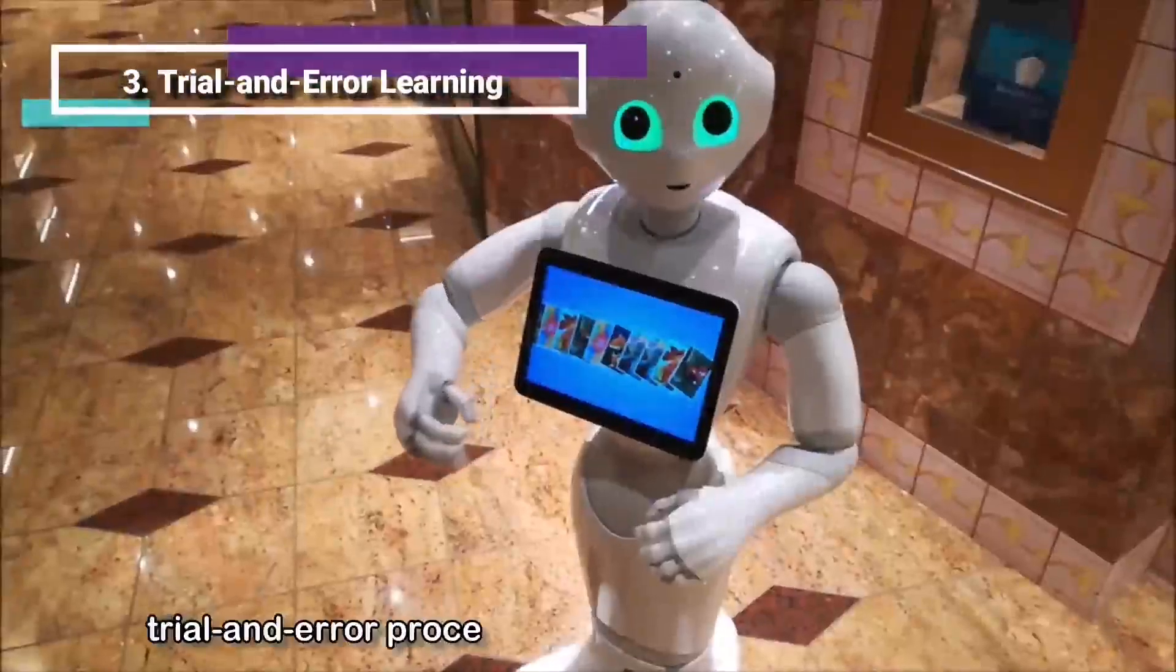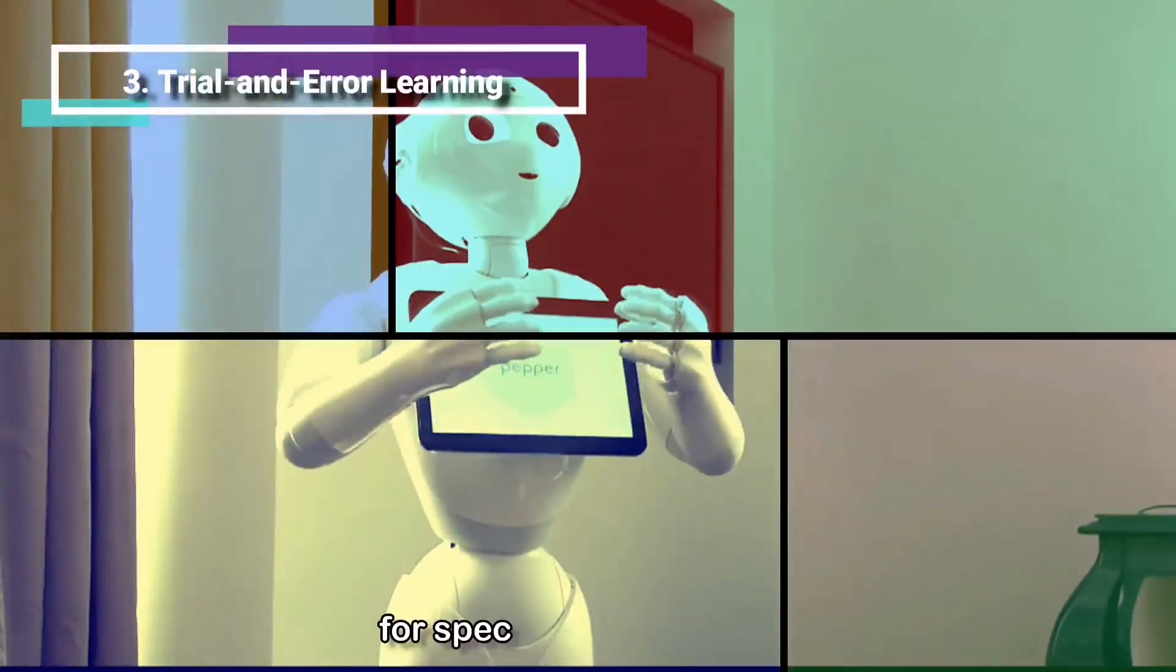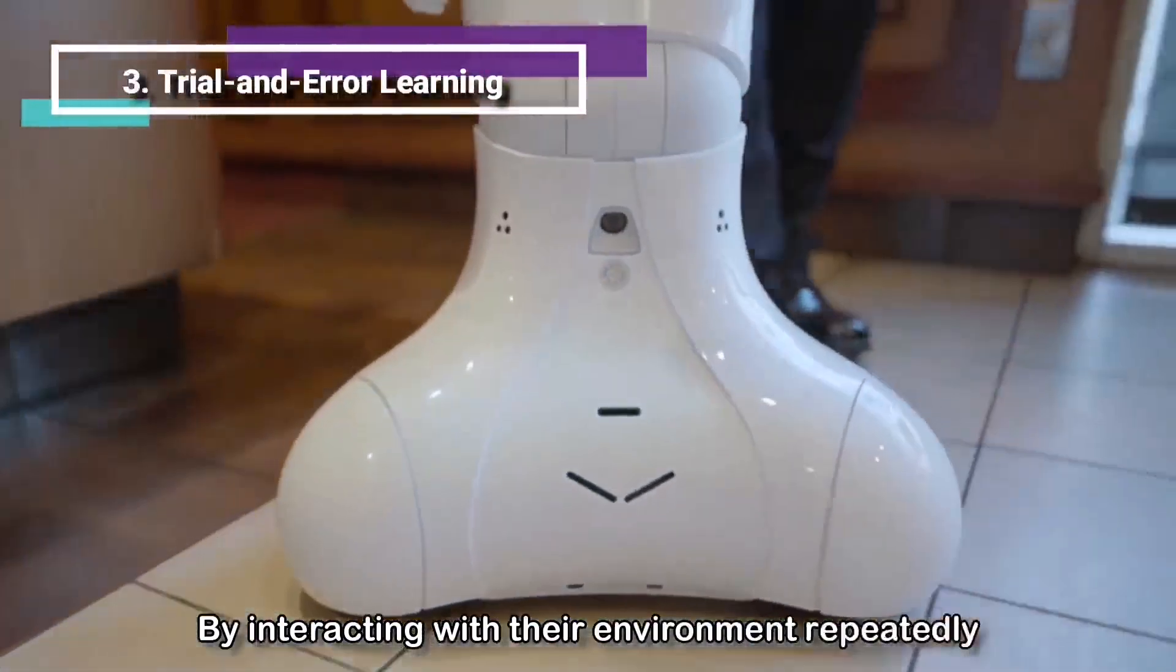Number three: trial and error learning. Robots equipped with reinforcement learning algorithms engage in trial and error processes to discover optimal solutions for specific tasks or goals. By interacting with their environment repeatedly, they receive feedback in the form of rewards or penalties based on their actions' success or failure.